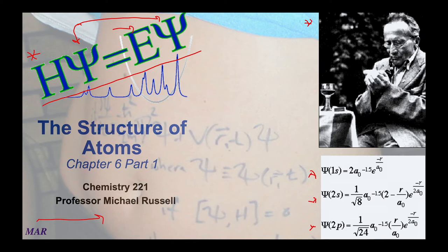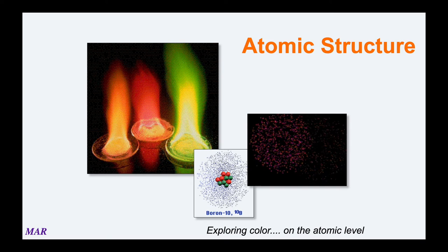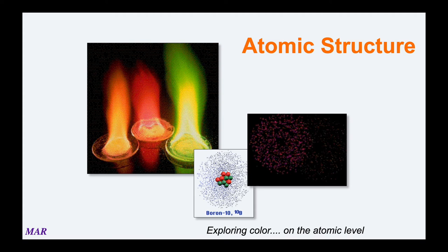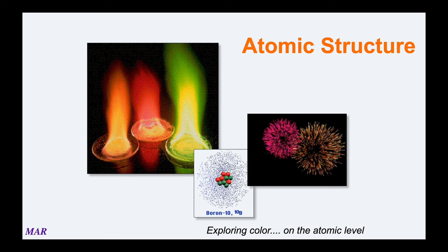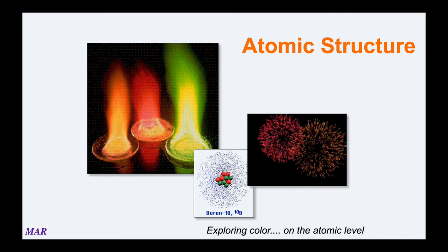So without further ado, let's check out Chapter 6, Part 1, where we investigate quantum mechanics and the structure of atoms. Atomic structure is very important, and we've already talked about how Rutherford's gold foil experiment was able to tell that the nucleus was very dense — the protons and neutrons were in the nucleus, and the electrons kind of circled around the outside. The circling around the outside part is what we're going to focus on big time in this section.